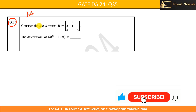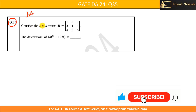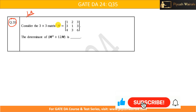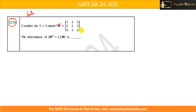Consider a three-by-three matrix M as given. We need to find the determinant of the expression M squared plus 12M.